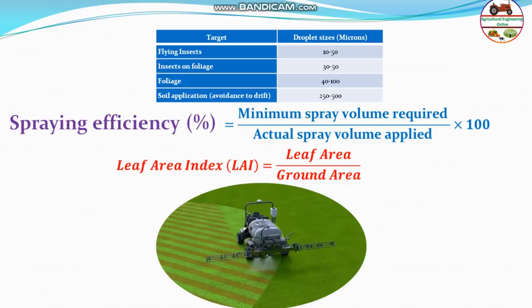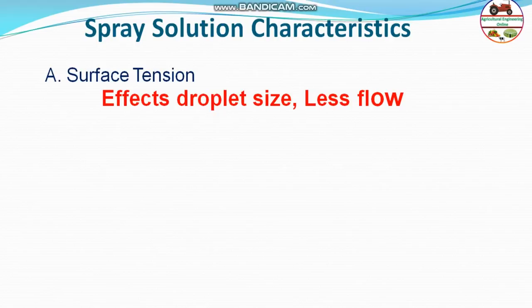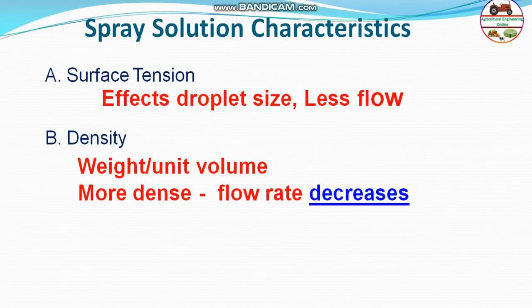Spray solution characteristics include surface tension, which affects droplet size — higher surface tension reduces flow. Density also reduces flow rate when higher. Viscosity influences the flow and pattern of the spray, as it resists flow.